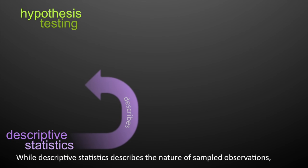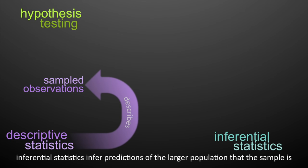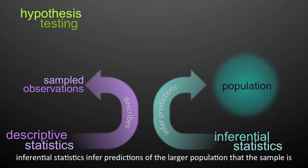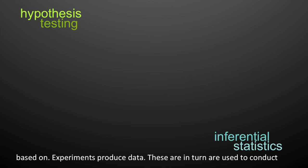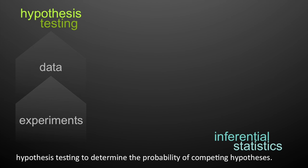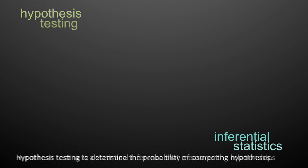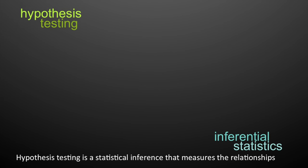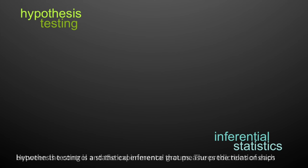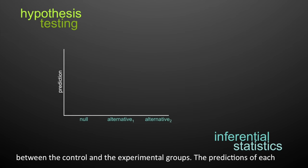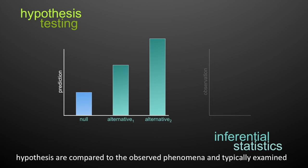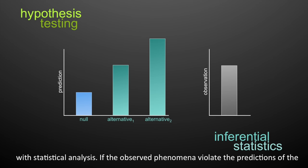While descriptive statistics describes the nature of sampled observations, inferential statistics infers predictions of a larger population that the sample is based on. Experiments produce data, which are in turn used to conduct hypothesis testing to determine the probability of competing hypotheses. Hypothesis testing is a statistical inference that measures the relationship between the control and the experimental groups.